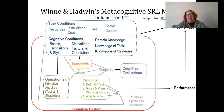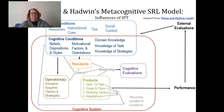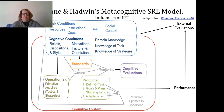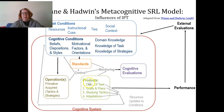Hadwin's metacognitive SRL model looks at self-regulation from an information processing perspective. We have our task conditions and cognitive conditions — what the task is and how I feel about it. We have external evaluations, the different components of the task within our cognitive system, and our performance at the end. I'll move myself on screen so you can see where it says 'external evaluations.' Let's take a deeper dive.